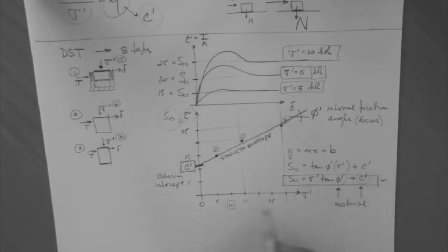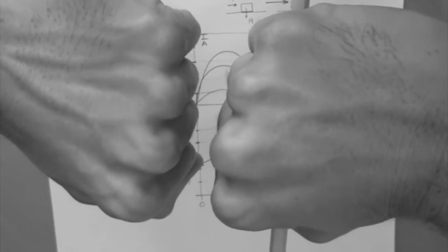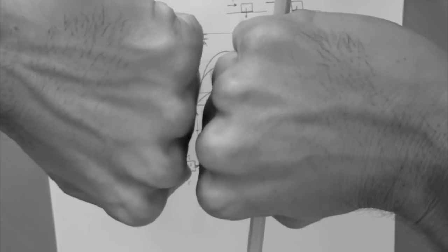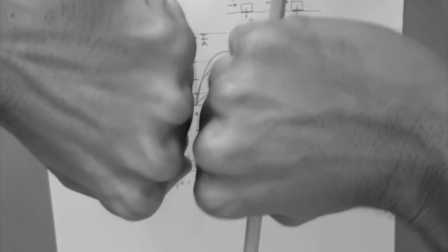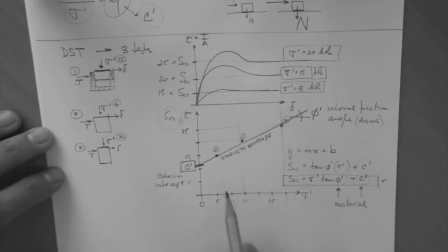So, look. For zero effective stress, the strength is c'. So we're saying that if there's zero stress between my knuckles, there's still a strength. How can that be? I mean, if the knuckles are not touching, I ensure that there's zero stress between them. There's no resistance. So how come a soil can exhibit a strength called c' when the effective stress is zero? It's actually very simple.